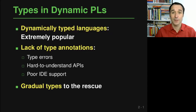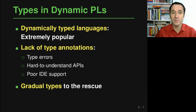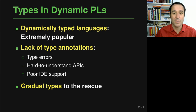The motivation for this work is that dynamically typed languages have become very, very popular, but they are lacking type annotations. So in code written for example in Python or JavaScript, developers by default do not add type annotations, which leads to a lot of problems.